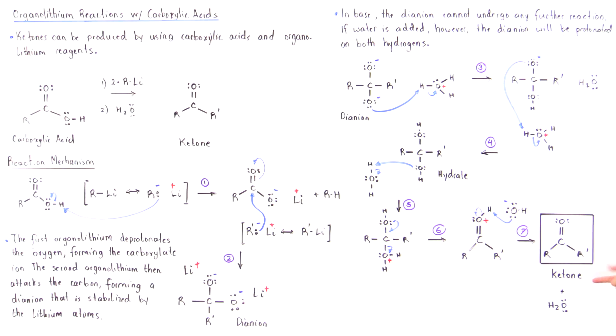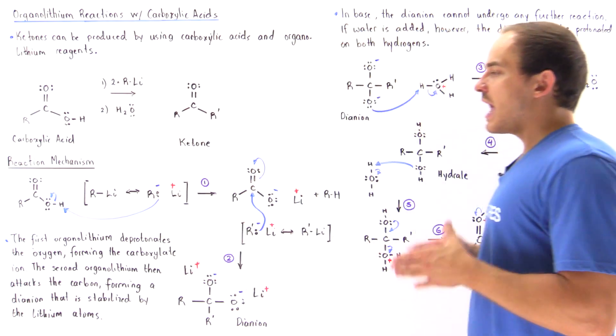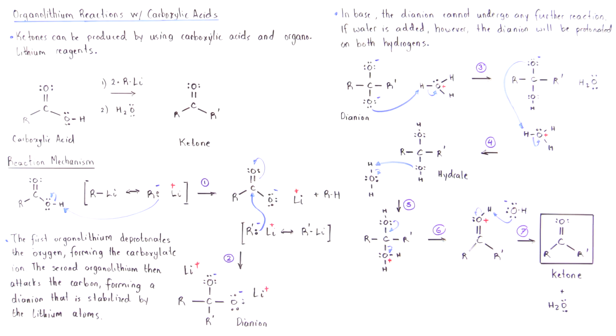This is the ketone. We reform water in step seven. This reaction allows us to take a carboxylic acid and produce a ketone.